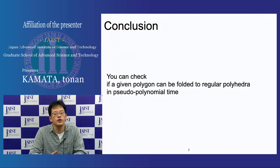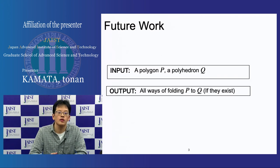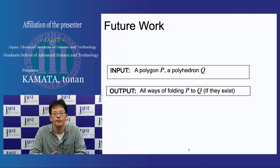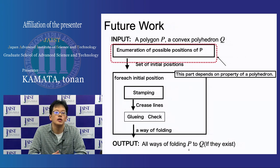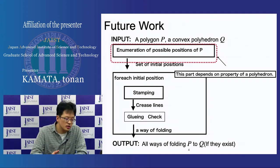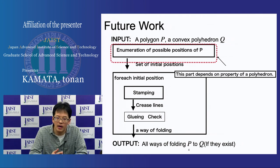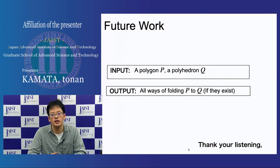In conclusion, you can check if a given polygon can be folded to a regular polyhedron in pseudo-polynomial time. Hereafter, we consider the more general case of polyhedra. In our algorithm, the enumeration of possible positions of the polygon depends on the property of the polyhedron. In the general case, we cannot bound the computational time of this part, so a new algorithm is necessary. Thank you for listening.